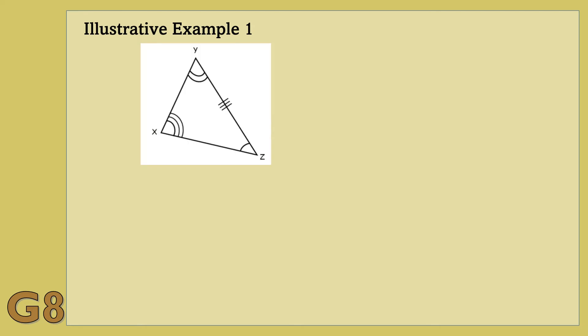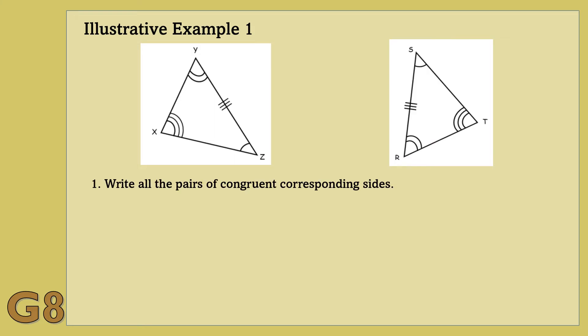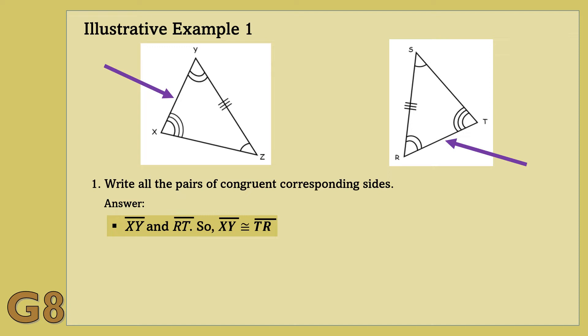Now, I want you to look at this example. We have here triangle XYZ and triangle RST. We are going to write all the pairs of congruent corresponding sides. Can you answer it, students? Write your answers on your paper. Now, let us see the answers. Line segment XY and line segment RT are congruent corresponding sides. So, line segment XY is congruent to line segment RT. Why? Because line segment XY has the same markings as line segment RT.